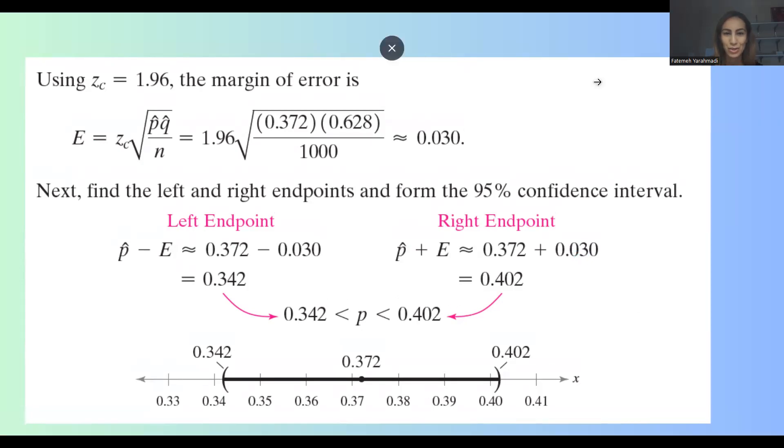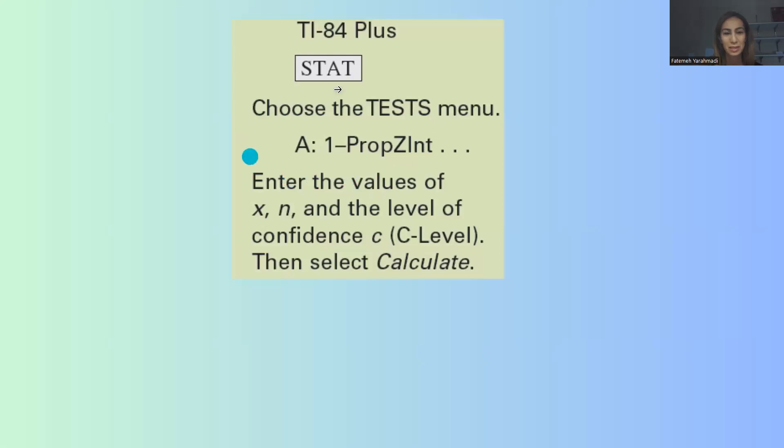And if you're interested in using your calculator, these are the steps that you need to take. You need to go to stat and then go to tests. Find one proportion z-interval. Again, one proportion z-interval. Then you're going to enter the values in order: x comma n comma the level of confidence, which is 0.95. Again, your calculator doesn't understand percent. You need to convert everything into decimal.